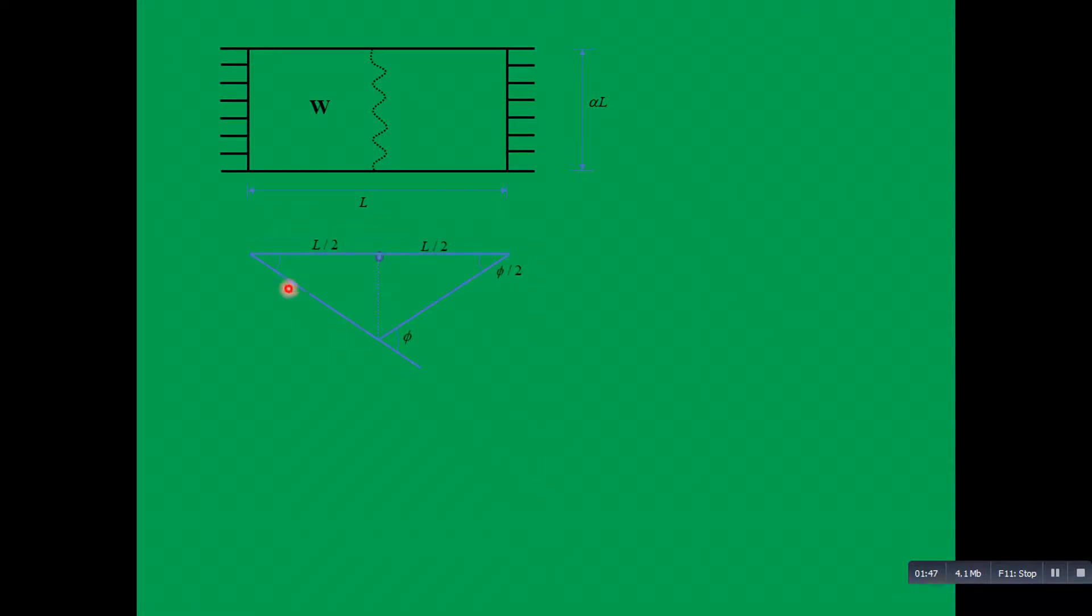This triangle represents the deflection shape upon failure. It divides the slab into two equal segments, L over 2, L over 2. Say this angle is phi and this angle will be phi over 2. According to energy principle, energy is conserved and hence internal energy must equal external energy. Internal energy is given by the product of moment multiplied by rotation multiplied by the length of projected yield line, and external energy is given by the product of area multiplied by the load multiplied by the average move distance for each half slab.